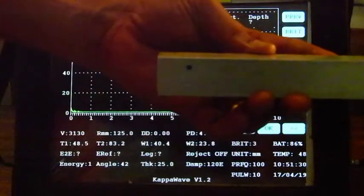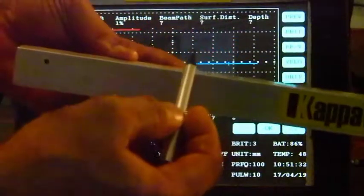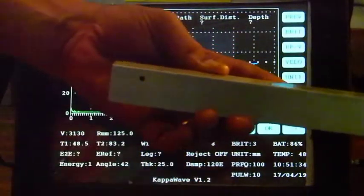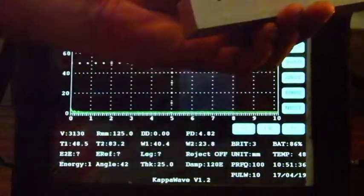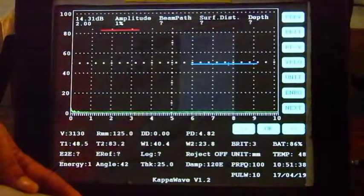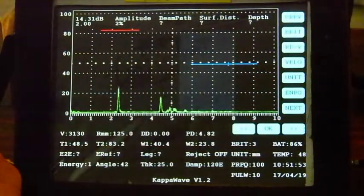The ultrasonic instrument would give you the beam path, surface distance and depth in the case of an angle beam test of a component like this. The same method can also be used for weld testing.